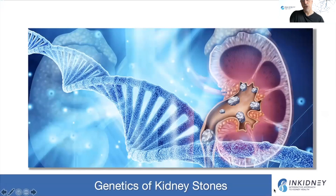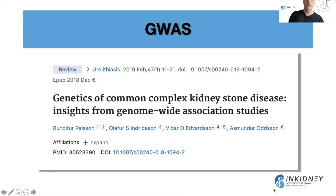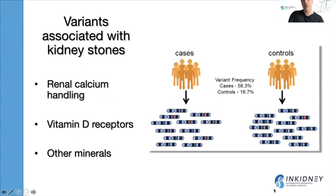When we think about the genetics of kidney stones, we remember that two-thirds of patients with calcium-containing kidney stones have a relative with kidney stones. When we talked about the GWAS studies — the genome-wide association studies — these studies found a link between genetics and kidney stones. There are a lot of genetic variants that have been associated with kidney stones, including genetic variants in renal or kidney handling of calcium, variants in the vitamin D receptors, and variants in the handling of many other minerals.